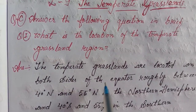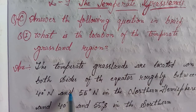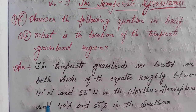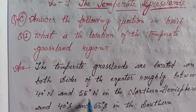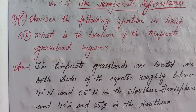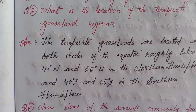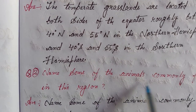Answer: The temperate grasslands are located on both sides of the equator, roughly between 40 degrees north and 55 degrees north in the northern hemisphere, and 40 degrees south and 55 degrees south in the southern hemisphere.